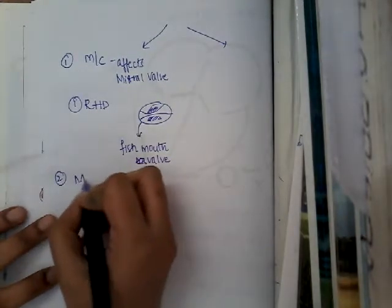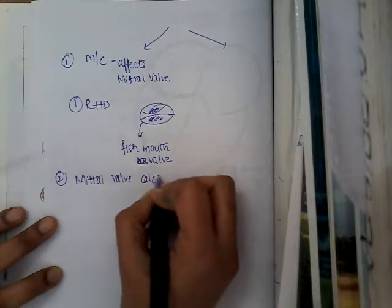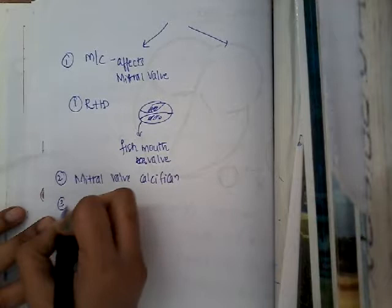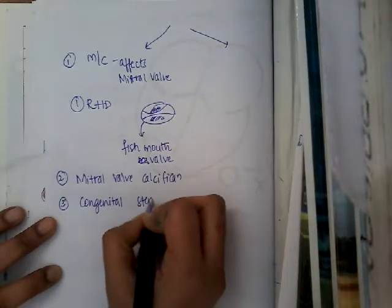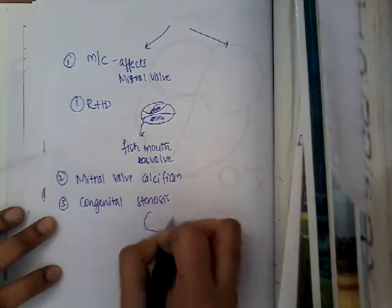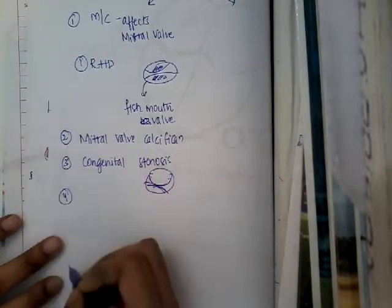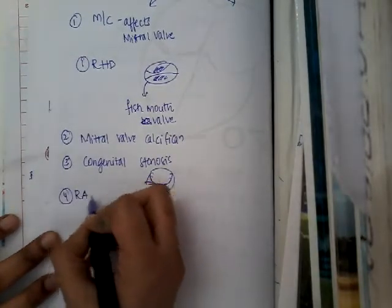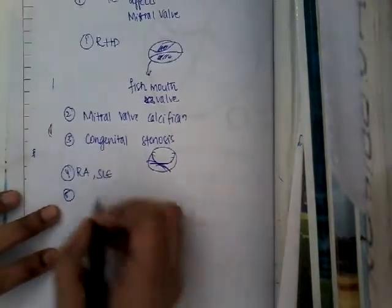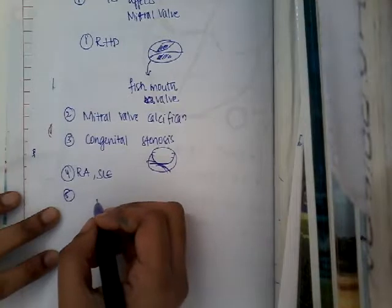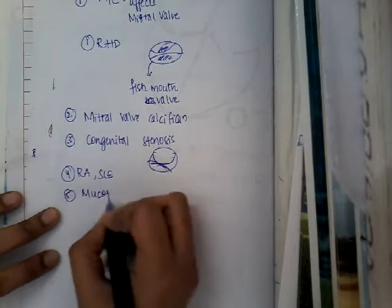The second true cause is mitral calcification, where the mitral valve calcifies due to various reasons. Third is congenital stenosis of the mitral valve — congenitally the valve is stenosed and unable to open. Fourth are connective tissue disorders like rheumatoid arthritis and SLE. Fifth are mucopolysaccharide diseases, such as lysosomal storage disorders and other metabolic disorders.